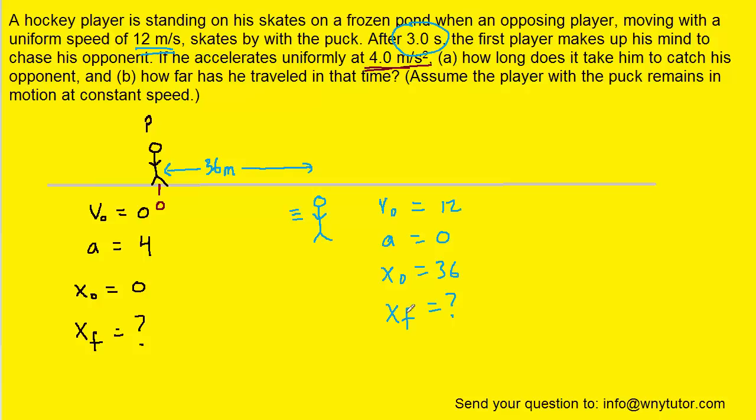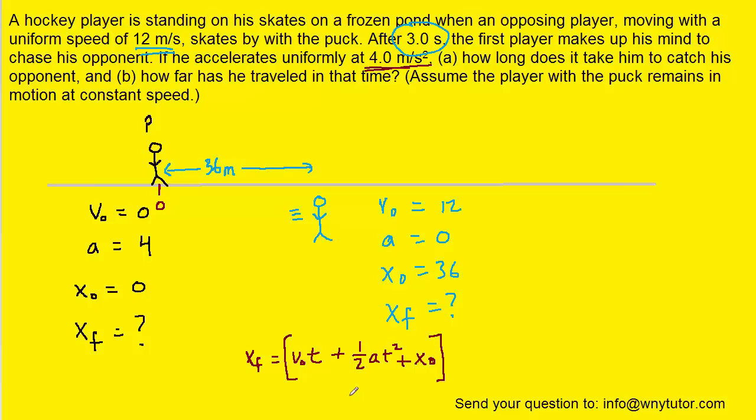A kinematics equation will be helpful here. Since delta x equals the final quantity minus the initial quantity, we can replace delta x with xf minus x-naught, and solve for xf by adding x-naught to the other side. This gives us an expression for the final position of a moving object. In order for the player to catch the opponent, the final positions of each will be the same — that is a very important fact.